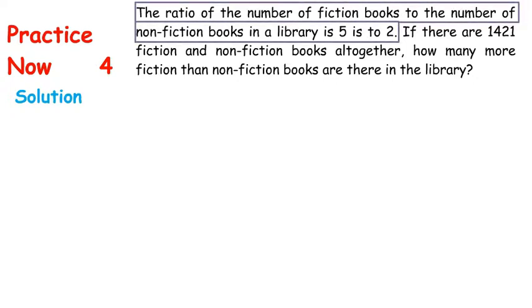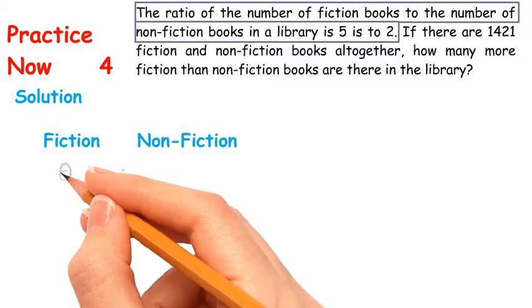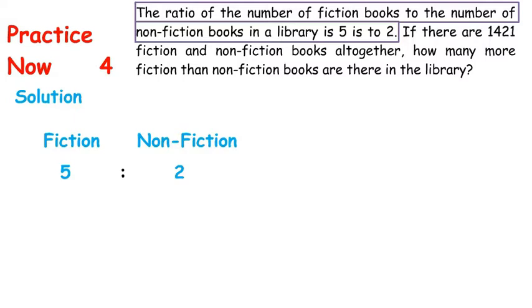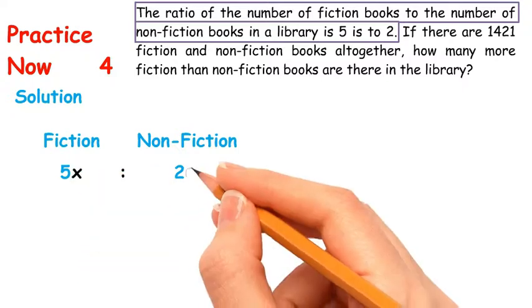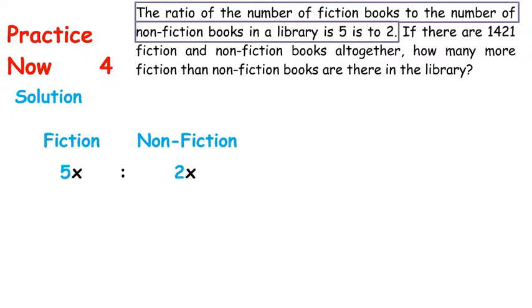The ratio of the number of fiction books to the number of non-fiction books is 5 to 2. We don't know the exact number of fiction and non-fiction books. Let's say the number which we multiply both parts is x, to find the exact number of fiction and non-fiction books.